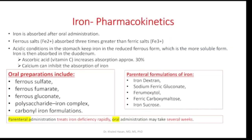For iron pharmacokinetics, we can prescribe iron products orally or as injection. Ferrous sulfate, Fe2+, is absorbed more rapidly than ferric salts, Fe3+. So ferrous form is more easily absorbed than ferric. Acidic conditions in the stomach facilitate absorption by reducing ferric to ferrous form. Ascorbic acid, vitamin C, increases absorption of ferrous iron by 30%. Calcium inhibits absorption of iron.